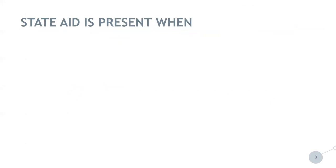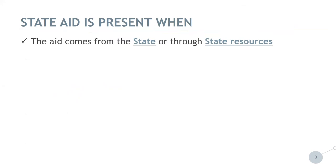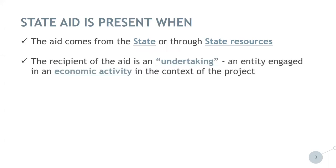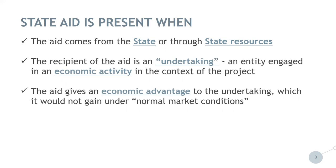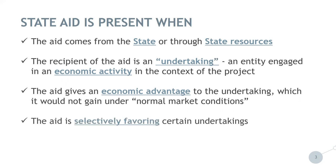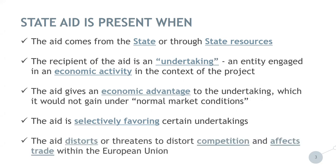State Aid is present in a Central Europe project when the aid comes from the state or through state resources — this is always the case for the Interreg Central Europe Programme. When the recipient of the aid is an undertaking — that is an entity engaged in an economic activity in the context of the project — the undertaking needs to receive an economic advantage which it would not gain under normal market conditions. Further, this aid selectively favours certain undertakings, which is usually the case in the Central Europe Programme. The aid distorts or threatens to distort competition — almost certainly yes when there is an advantage given. And the aid affects trade within the European Union, which is usually so since ETC programmes generally do not have purely local effects.